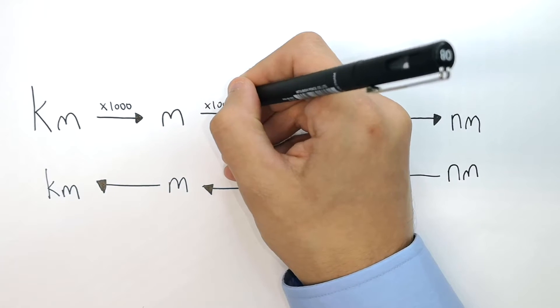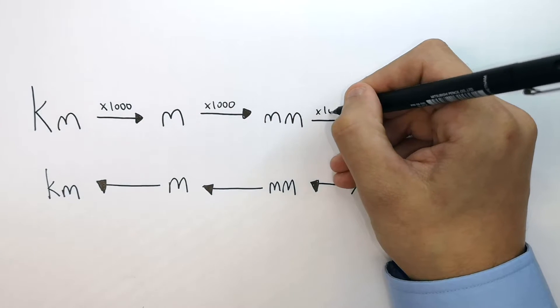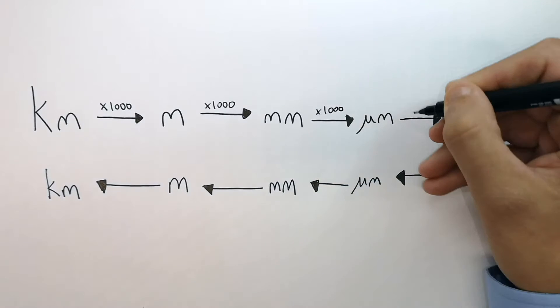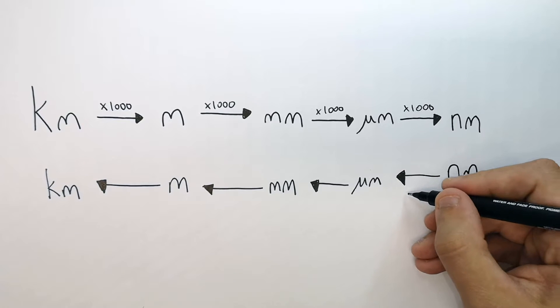One thousand millimetres makes up one metre, so you times by a thousand. One thousand micrometres makes up one millimetre, and one thousand nanometres makes up one micrometre.